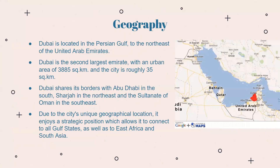Next is geography. Dubai is located in the Persian Gulf, to the northeast of the United Arab Emirates. Dubai is the second largest emirate after Abu Dhabi, with an urban area of 3,885 square kilometers and the city roughly 35 square kilometers. Dubai shares its borders with Abu Dhabi in the south, Sharjah in the northeast, and the Sultanate of Oman in the southeast. Its unique geographical location allows it to connect to all Gulf states as well as East Africa and South Asia.